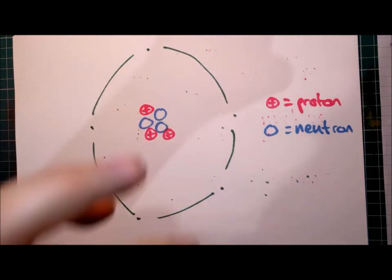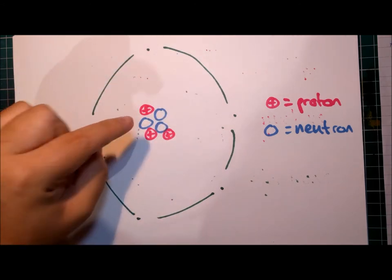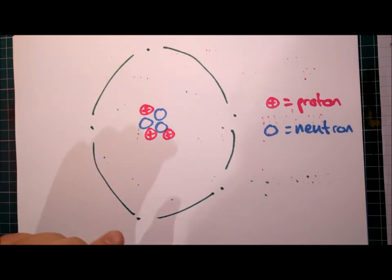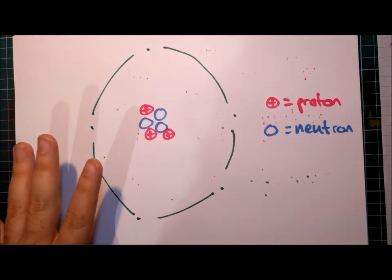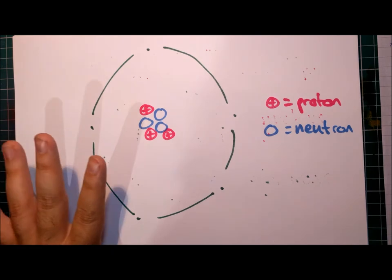We knew that almost all the mass was concentrated here in the middle, but we didn't know that there were extra particles other than protons. And it was 20 years later, after Rutherford's alpha-gold leaf scattering experiment...